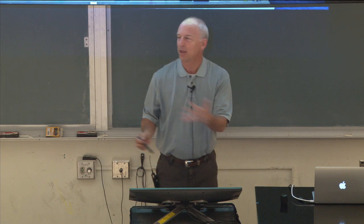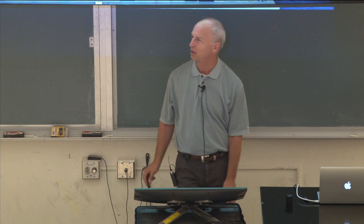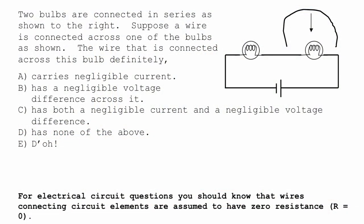And so the next question or two gets at that. So maybe I should have asked the next question or two and then see how you feel about it. Two bulbs are connected in series as shown to the right. So we already decided that this wire and that bulb have the same voltage difference across them. Suppose a wire is connected across one of the bulbs as shown. The wire that is connected across this bulb definitely, in other words you know for sure,